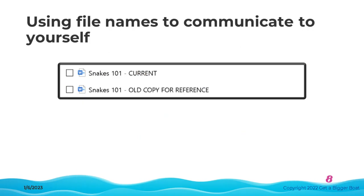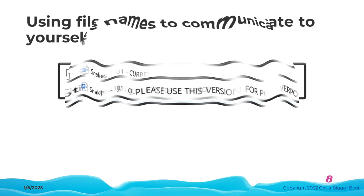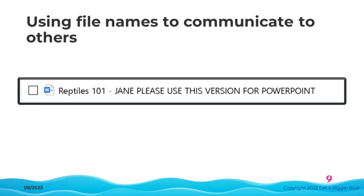As you work on projects, you handle different files and copies of files. Sometimes, for example, you might have a good version of something you're writing, but then want to explore making some major changes to it, and you don't know whether those changes are going to work out. You can save the good version and work on a copy. Instead of naming files things like "new" or "copy," use file names to clearly communicate to yourself which version is which. I usually put that kind of information in all caps, so it's easy to see and it's clearly not part of the actual file name. Another good use of file names is when you are sharing files with other people and you want to make sure that they know what the files are for. For example, in this case, the Reptiles 101 document is going to be used as the basis for a PowerPoint. Jane is working on that, so to make it clear to her which file to use, it's right there in the file name. "Do not use" is another good thing to note.